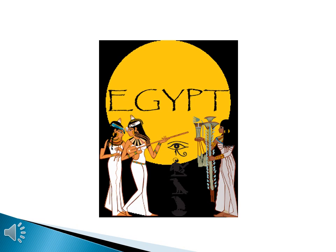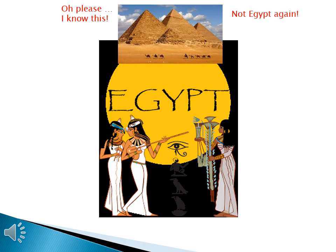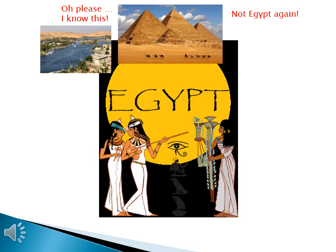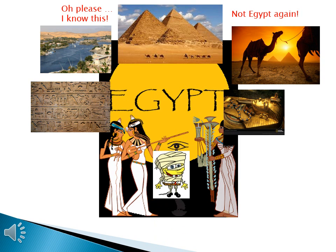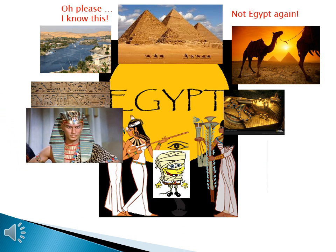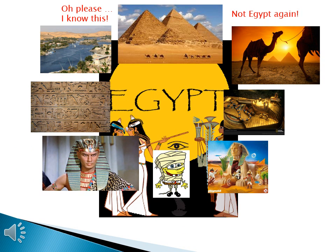Welcome to World History 1 Lecture 2.4 on the Geography of Egyptian Civilization. I know what you're thinking: not Egypt again. How many times do I have to learn about this place? It's got pyramids. I know about the Nile River. There's camels, hieroglyphics, King Tut, mummies, pharaohs, and the sphinx. What else can I learn about Egypt?